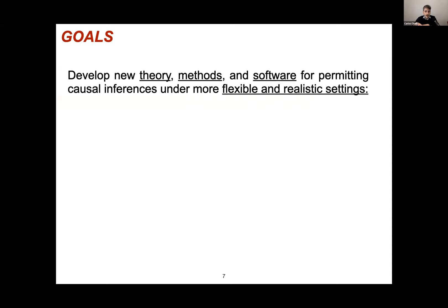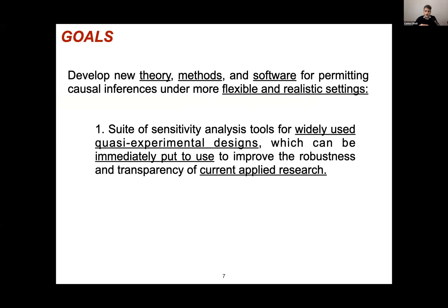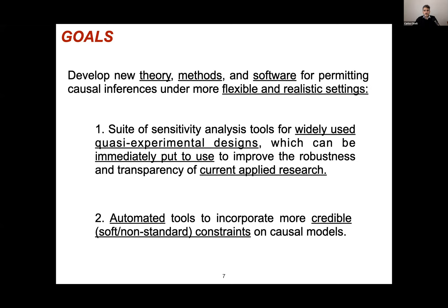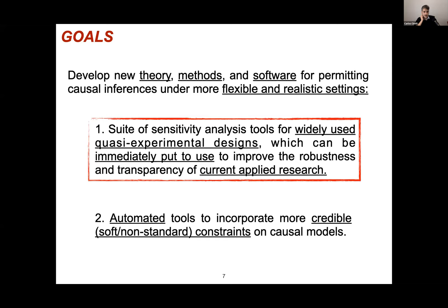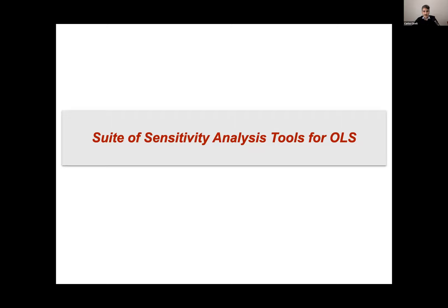Our main goal is to develop new theory, methods, and software for causal inference under more flexible and realistic settings. More pragmatically, I divide this into two projects. The first is to develop a suite of sensitivity analysis tools for widely used quasi-experimental designs, for immediate use by researchers. The second is to build automated tools incorporating more credible, non-standard constraints on causal models. For this talk, I'll focus mostly on the first project — sensitivity tools for ordinary least squares and instrumental variable regressions.